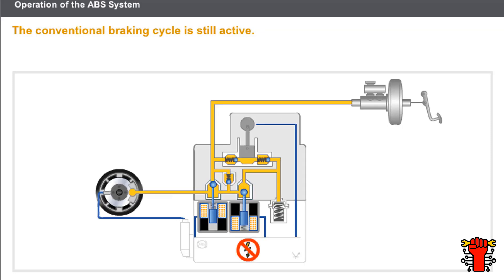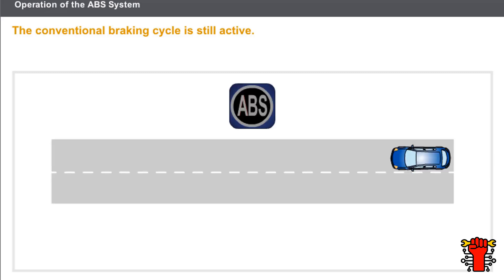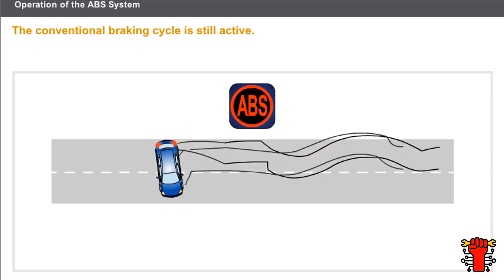When the ABS system ceases to be operational, all the solenoids are deactivated and are automatically reset to the rest position. The conventional braking cycle is still active, and the circuit pressure is directly sent to the brake cylinders. However, the driver must be aware of the consequences of driving without ABS or with the ABS system inoperative.